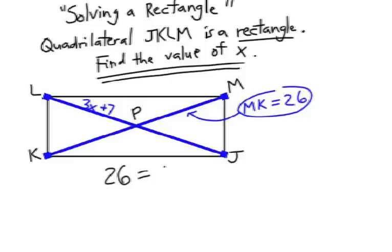In other words, LP is half of its entire diagonal, but those diagonals are congruent in a rectangle. So I am going to write 2 times 3X plus 7 has to equal the entire diagonal of 26.